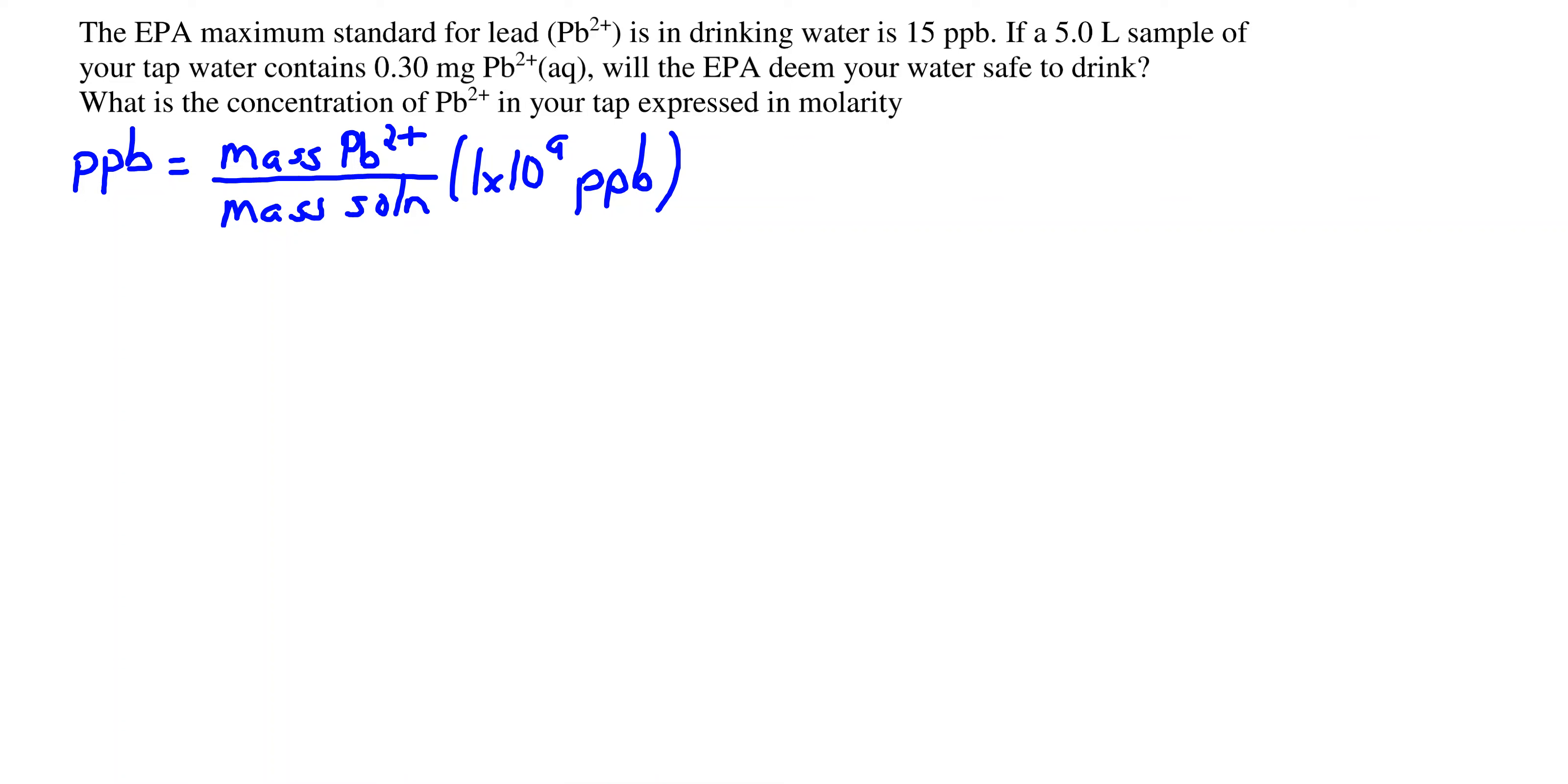Here we're asked to calculate the concentration of lead in parts per billion. Let's recall the definition: parts per billion equals mass of the part or the dissolved lead over the mass of the entire solution, and the multiplier is 1 billion parts per billion.